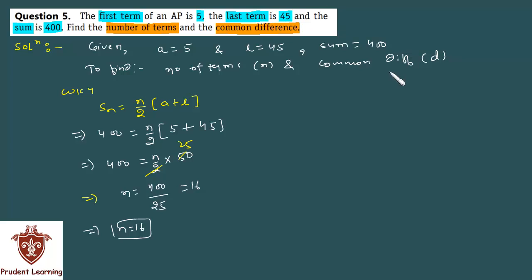Now you have to find common difference D also. Now also we are given last term L is equal to 45, and this last term is the 16th term. Now we know that nth term of an AP is given as, the nth term formula you know.